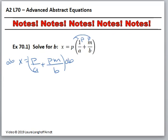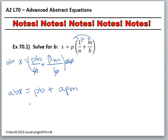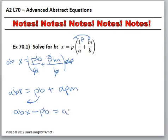So we know that the A is going to cancel over here, but we're going to still need the B. And then the B is going to cancel here, but we're still going to have the A. So we have ABX equals PB plus APM. Now that we don't have fractions, so much the better. Always keep in mind we're going to solve for B, so that means we need all the B's on the same side. I'm going to move things over and have ABX minus PB equals APM.